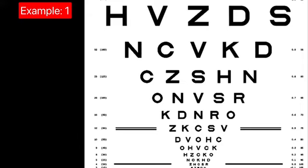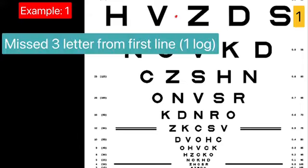Let's understand this with few examples. What will be the LogMAR value if anybody is not able to read three letters from the topmost line of 1 log? You need to add the value that patient did not read to the 1 log unit.